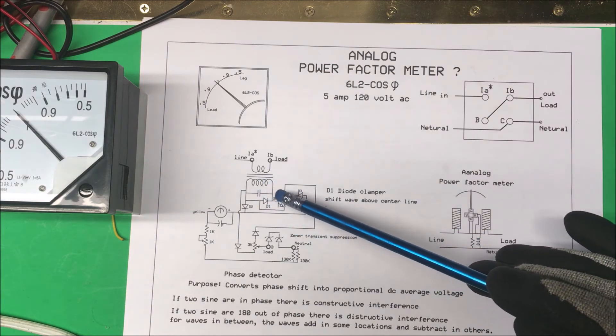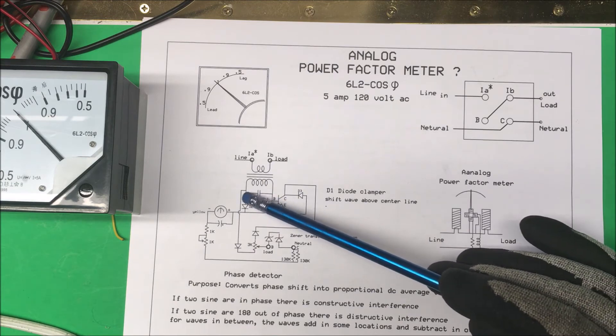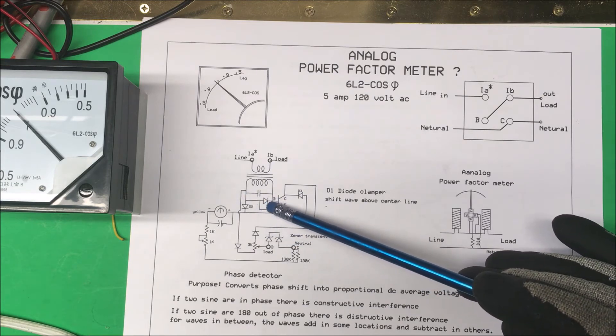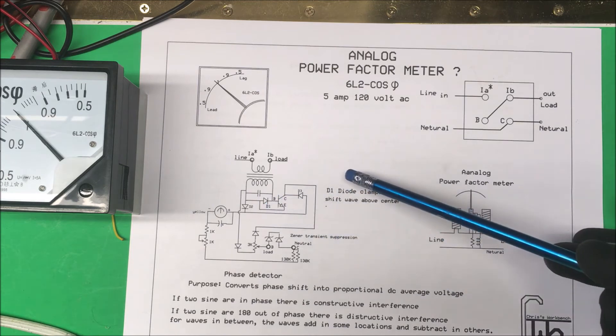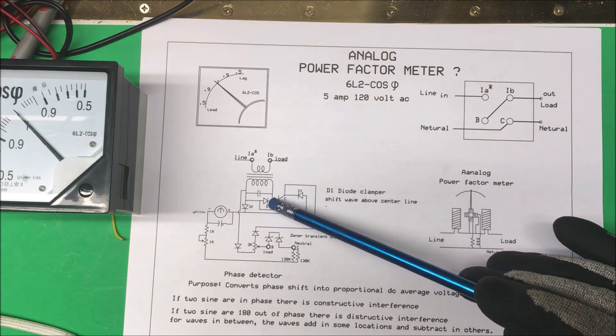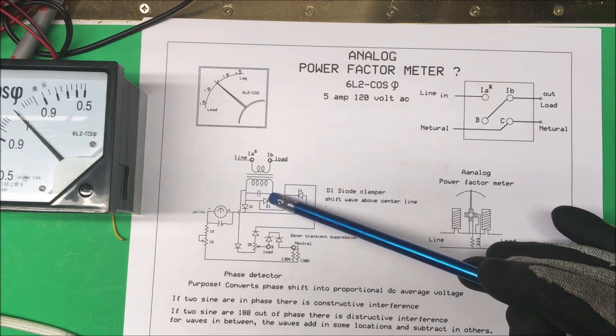Now this diode here, it's across the coil here. Normally I've never seen one done like this before. The only way I've seen it is as a diode clamper.